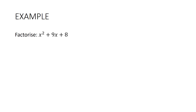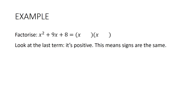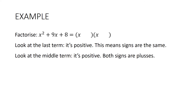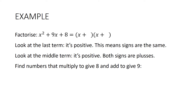Let's solve: factorise x² + 9x + 8. Write the two brackets with x in the front. The last term is positive so signs are the same. The middle term is positive so both signs are plus. We need numbers that multiply to give 8 and add to give 9 — that must be 1 and 8. It doesn't matter which way round. Check: x times x is x², 8x plus 1x is 9x, and 1 times 8 is 8. Correct.